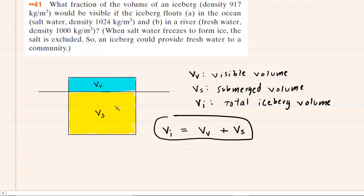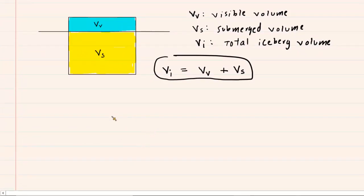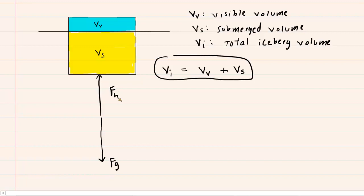This iceberg is floating, so it is in equilibrium, meaning the net force acting on the iceberg is zero. The forces acting on the iceberg include the downward gravitational force F sub G. In order for the iceberg to be in equilibrium, there must be another force in the opposite direction — and indeed there is: the buoyant force, labeled F sub B.